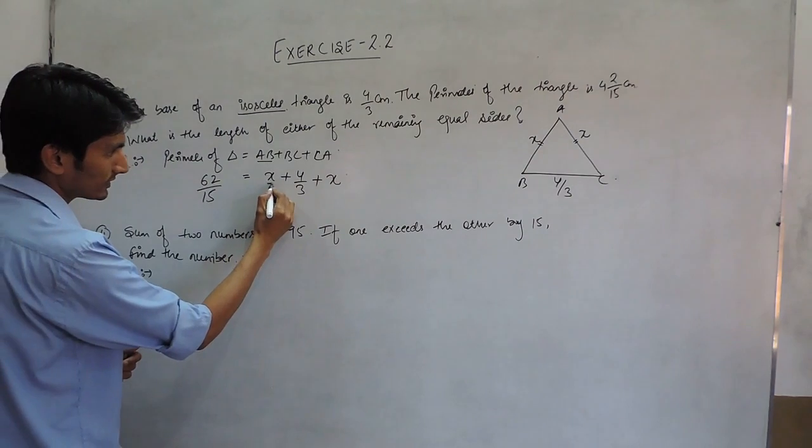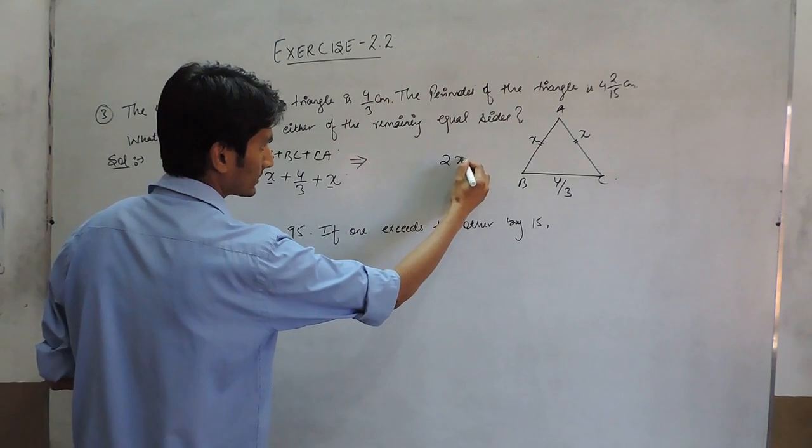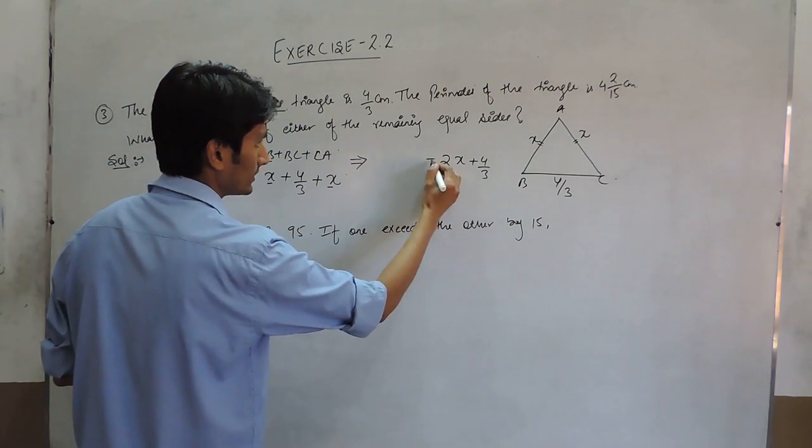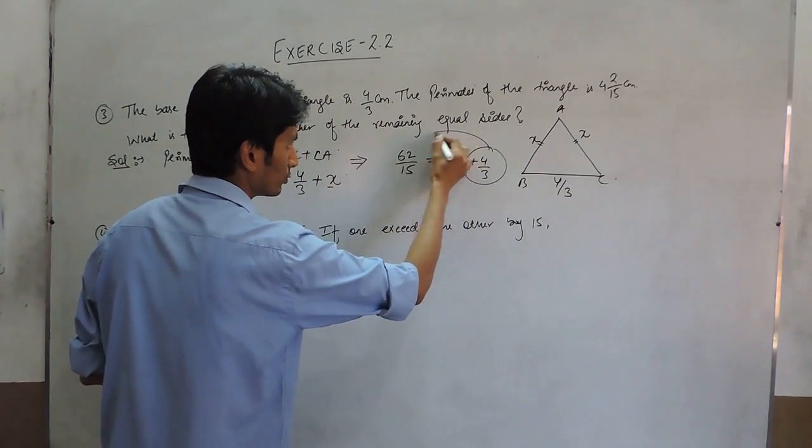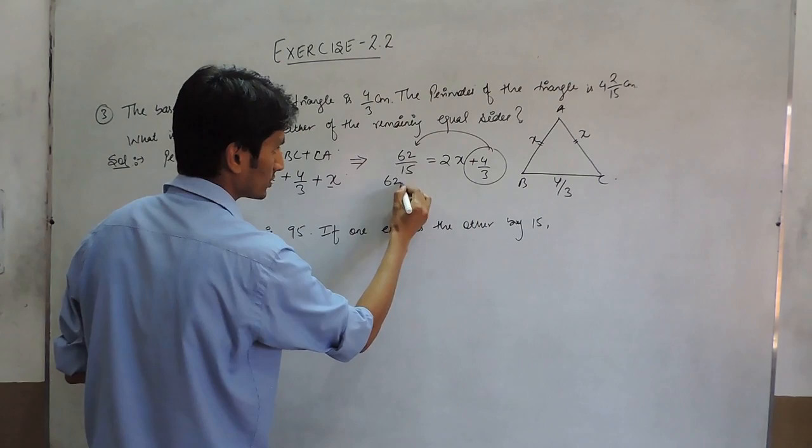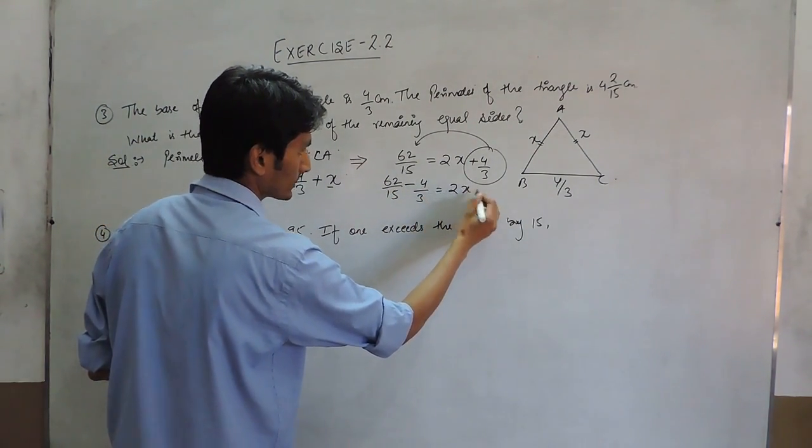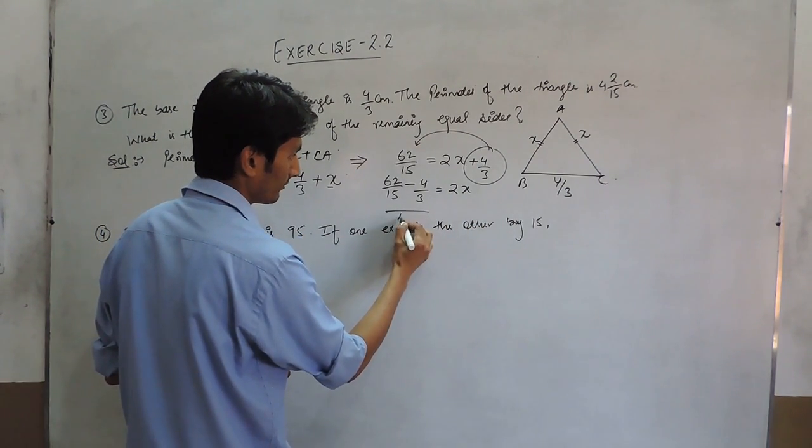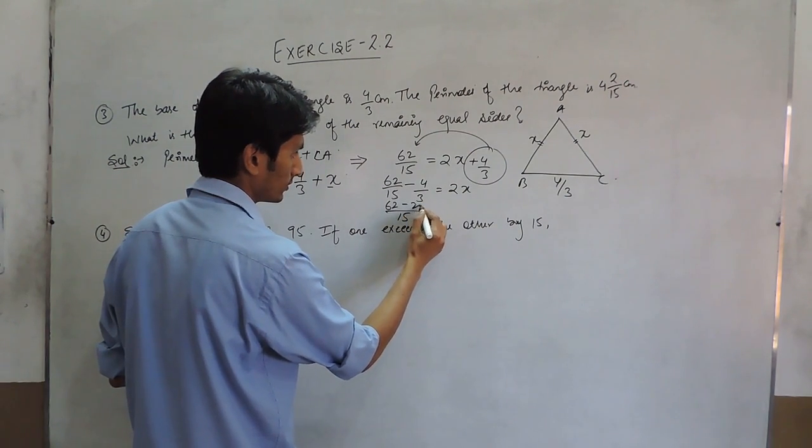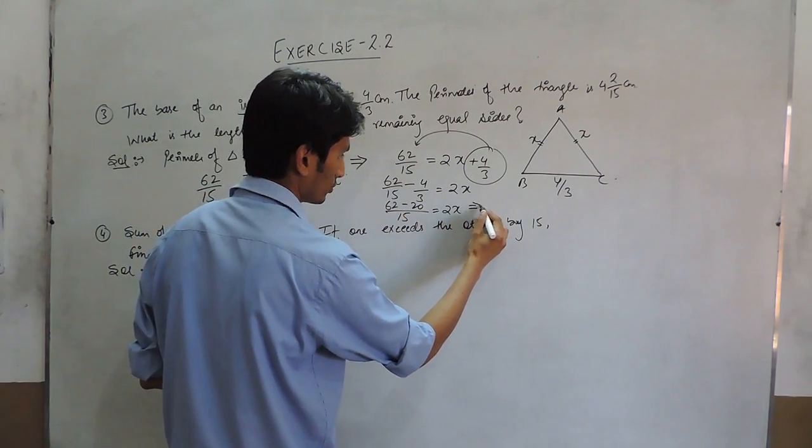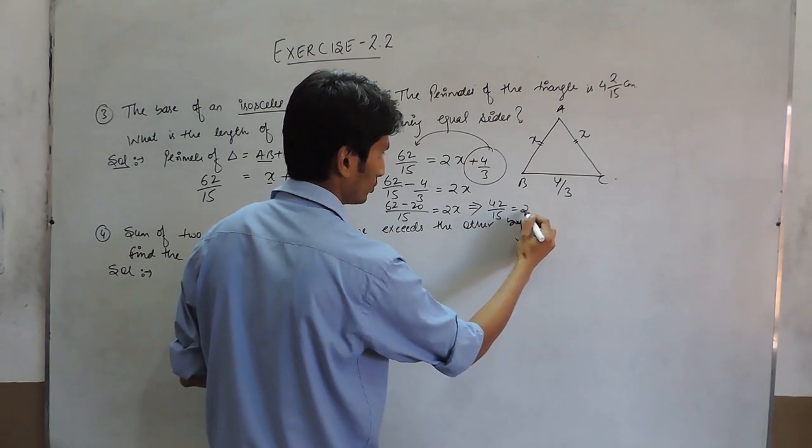Further solving this, this plus this will give you 2X plus 4/3 equals 62/15. And this constant shifted to this side, it will become 62/15 and positive will become negative for 2X. Taking LCM, 15, 62, 20 and 2X. For the result,